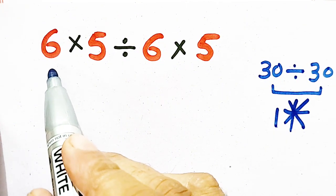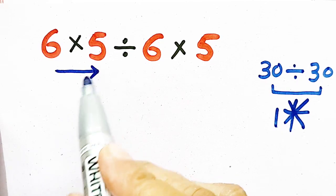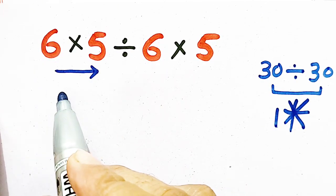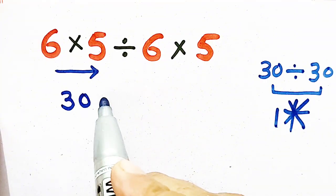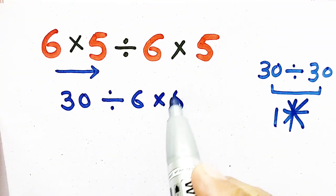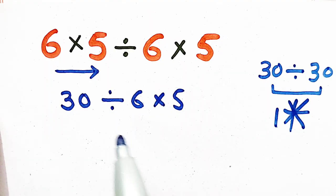PEMDAS says that we have to move from left to right. First of all, we have to multiply 6×5, which will be equal to 30, and divided by 6×5 will be written as it is.